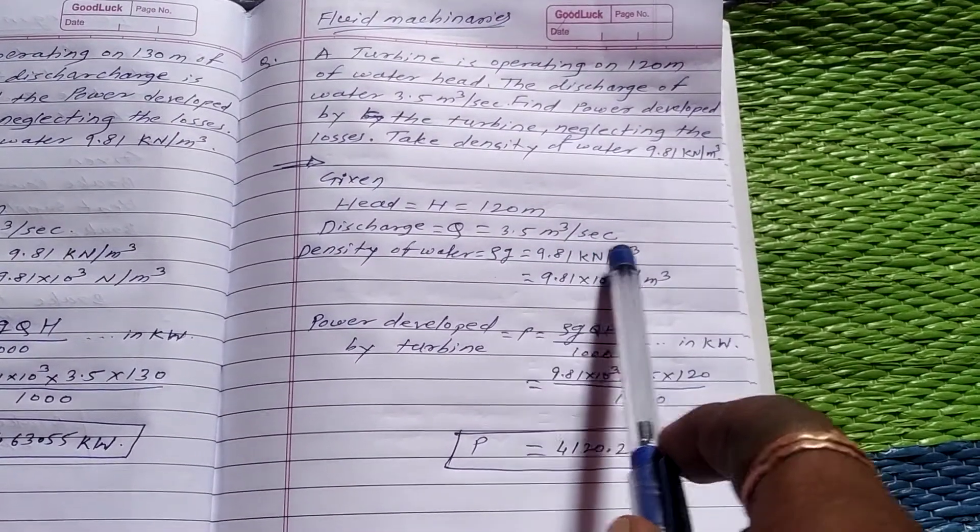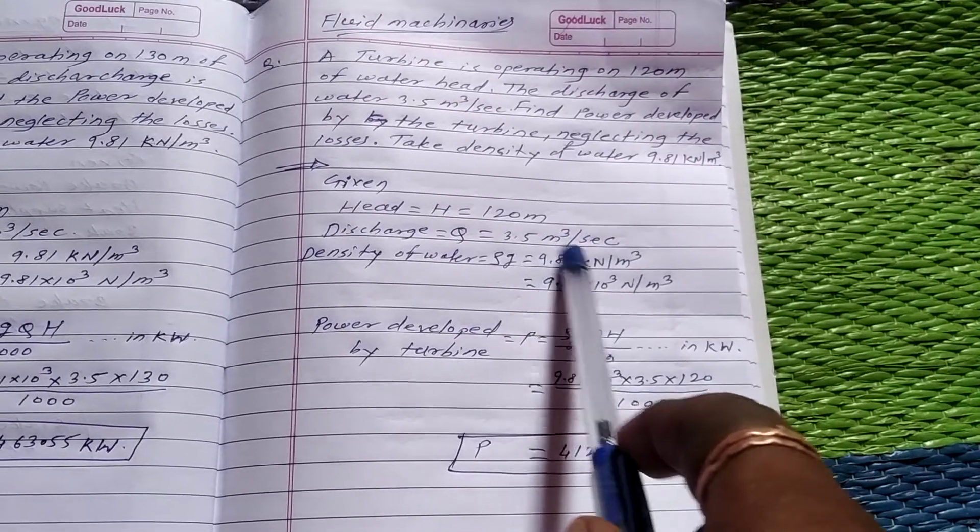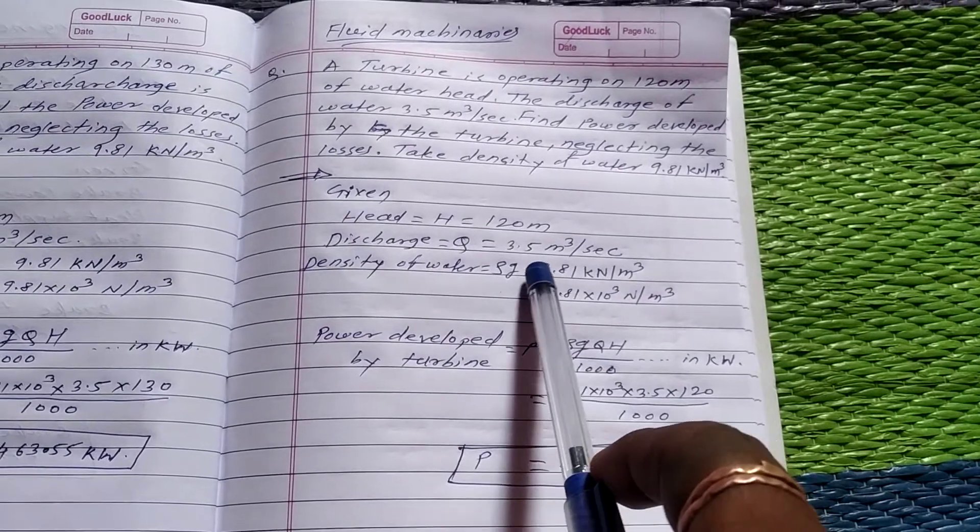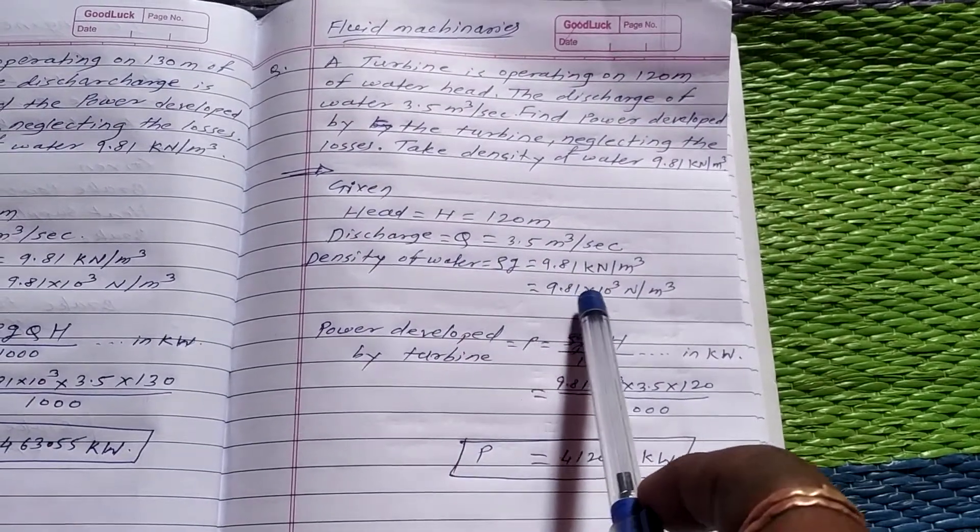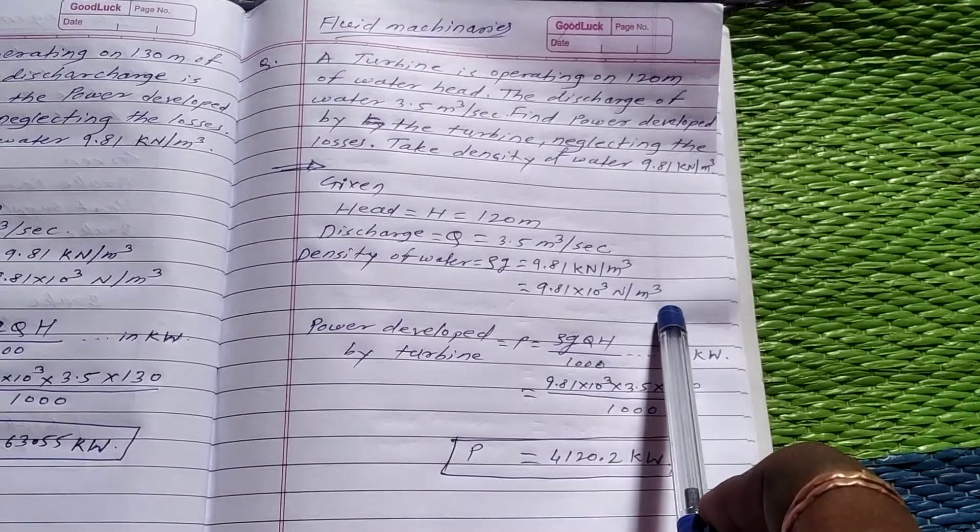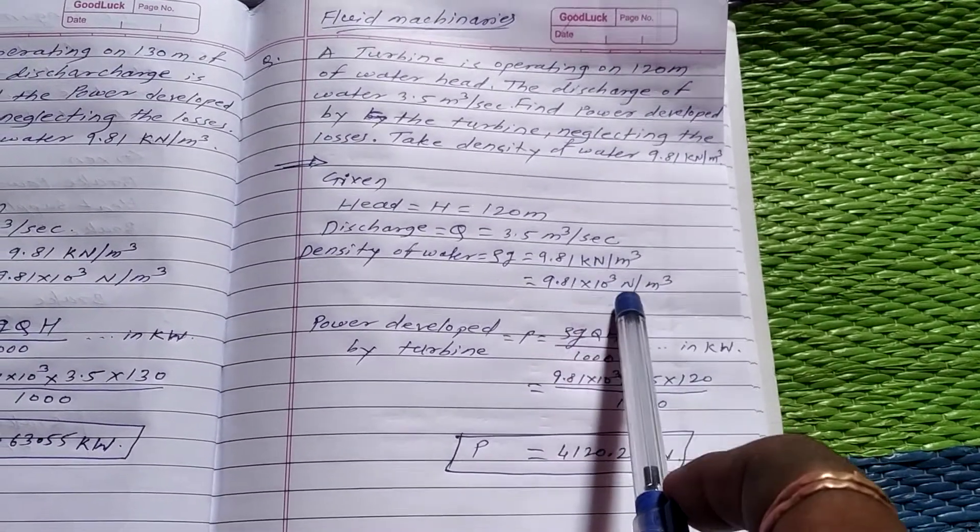We want this density in Newton per meter cube. So the density of water is 9.81 × 10³ Newton per meter cube. We convert kN into Newton.